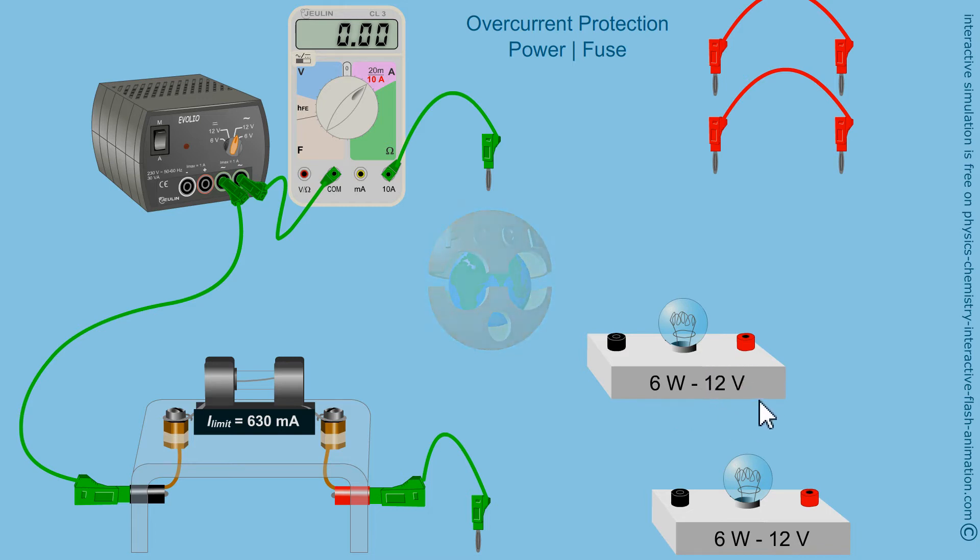I want to connect a bulb here to the 12 volts RMS from the generator. Therefore, I can anticipate the calculation. We have seen in class P equals V times I. I can therefore deduce that the current which will be displayed on the ammeter will be P divided by V, or 6 divided by 12 equals 0.5 Ampere.